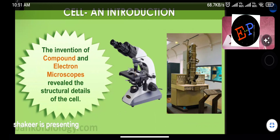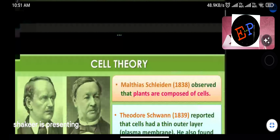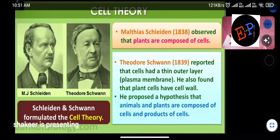The electron microscope works on the principle of diffraction of an electron — it behaves like a wave. The magnification ability of the electron microscope is very large, so even the detailed structure of a cell could be studied with its help.